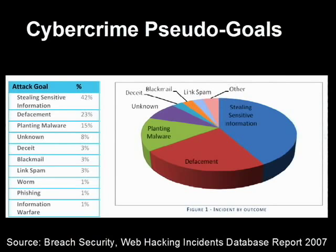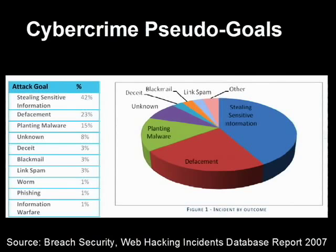The next highest category of intermediate goals is defacement — somebody changes what's on the front page of a website to get their own political message across. This report queried a lot of government agencies, so defacement is probably a bit on the high side compared to other databases. The next highest is planting malware: once the bad guys break into a website, they put JavaScript and/or ActiveX object tags onto pages such that when good users visit those legitimate sites, they have a binary download to their machine and get infected without even knowing it.